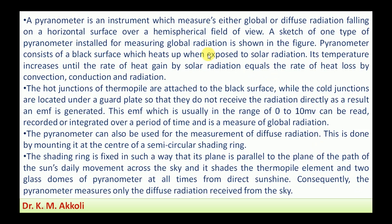The pyranometer is an instrument which measures either global or diffuse radiation falling on a horizontal surface over a hemispherical field of view — whatever radiation is falling above that hemispherical field is measured. A sketch of one type of pyranometer installed for measuring global radiation is shown in the figure. There are different types of pyranometers; the pyranometer consists of a black surface which heats up when exposed to solar radiation.